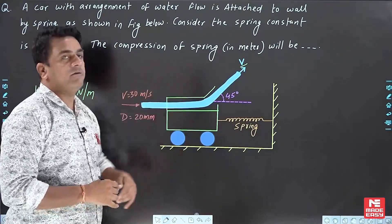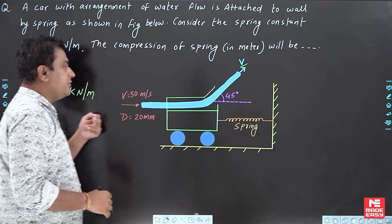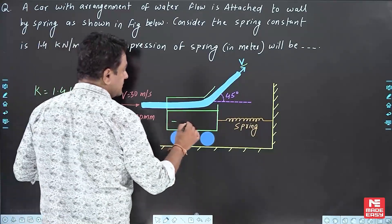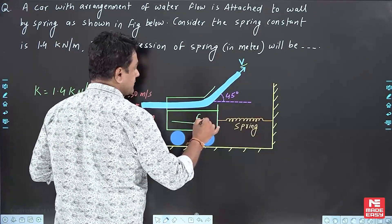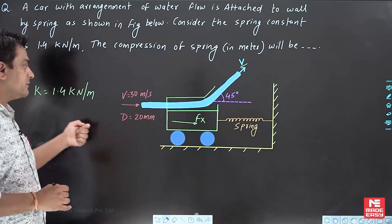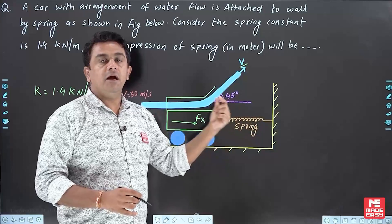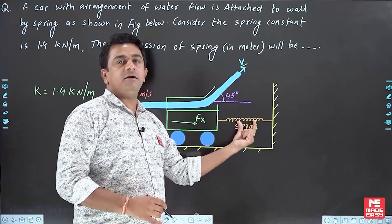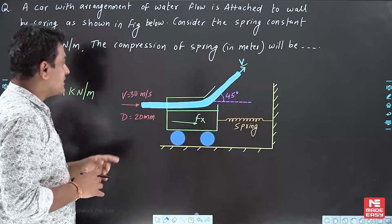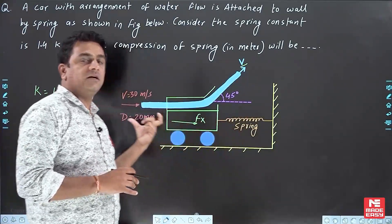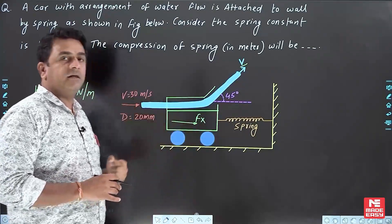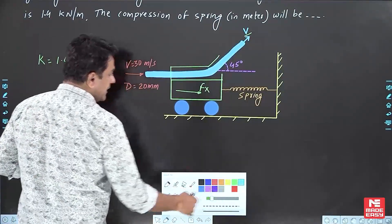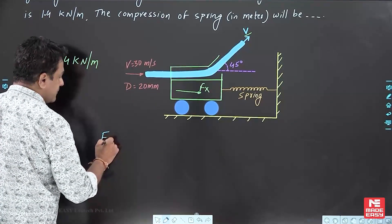The question asks for the compression of the spring in meters. When the jet hits the car, it applies a force in the positive x-direction. Because of that force, the car will start moving forward and the spring will get compressed. We need to calculate how much compression takes place due to the force the jet applies over the car. First, we will find out the force which the jet applies over the car.